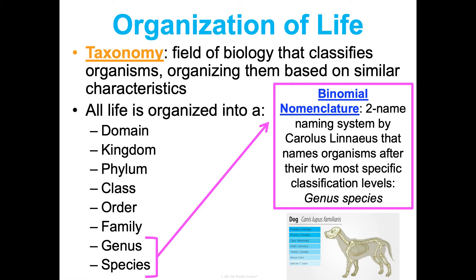Remember the difference between taxonomy and phylogeny. Even though both use similar data, evidence, and characteristics to classify organisms, phylogeny specifically looks at the evolutionary history of organisms whereas taxonomy does not. Even though they can inform each other, they are different fields.